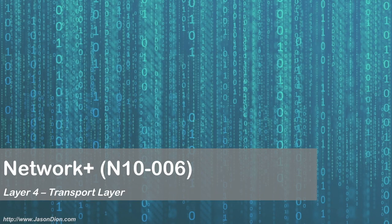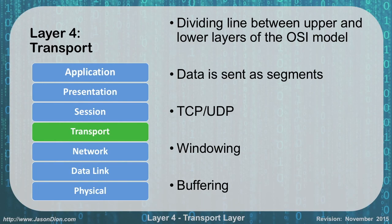Layer 4, the transport layer. In layer 4, we use this as our dividing line between the upper and lower layers of the OSI model. Your data is sent as segments going through the layers. TCP and UDP are also found at this layer, which is our Transmission Control Protocol and our User Datagram Protocol. We also conduct our windowing and our buffering at this layer.